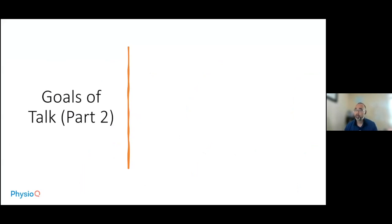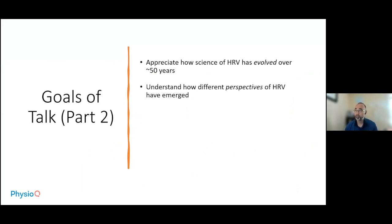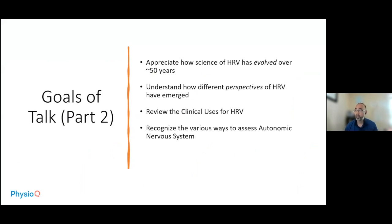The goals of this talk — part two — are: to appreciate how the science of heart rate variability has evolved over the past 50 years; to understand how different perspectives of heart rate variability have emerged; to review the clinical uses for heart rate variability; to recognize the various ways to assess the autonomic nervous system; and to appreciate the factors that influence heart rate variability.